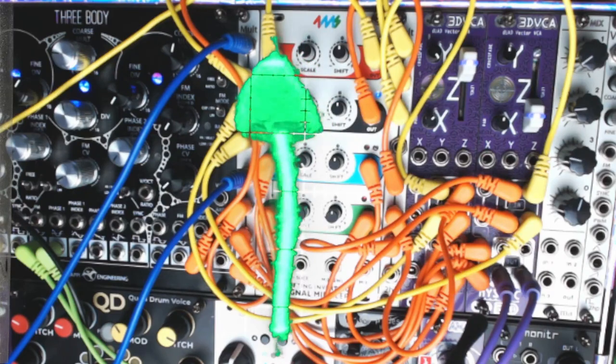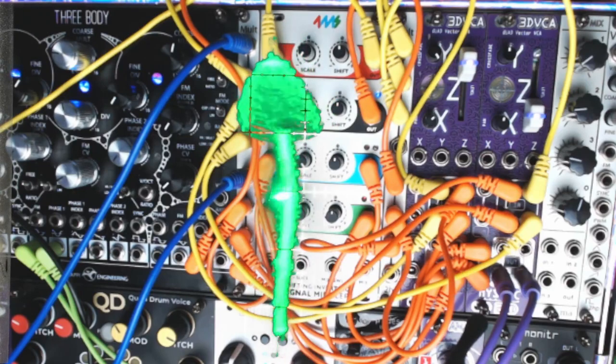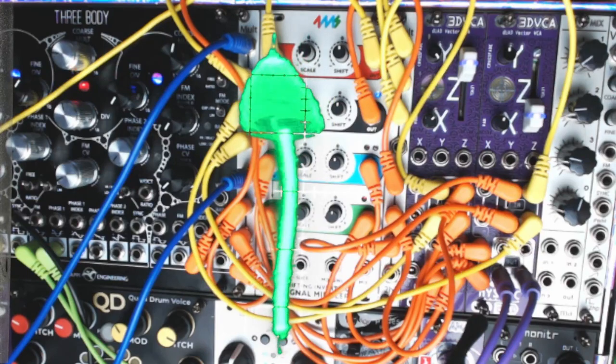We're going to be doing something that I actually haven't shown before, which is using 3DVCA as a four quadrant multiplier or a through zero VCA with the help of our handy voltage processor, the never leaving my synth 4MS SISM.